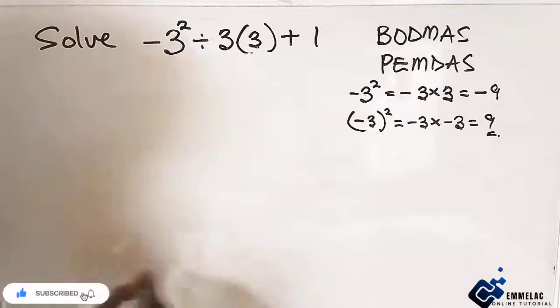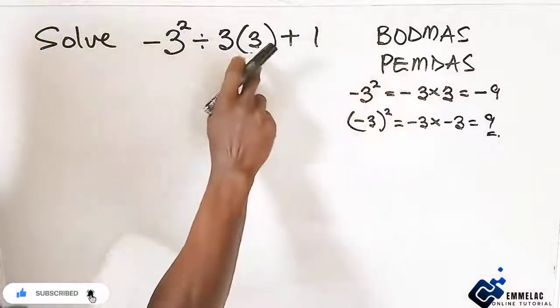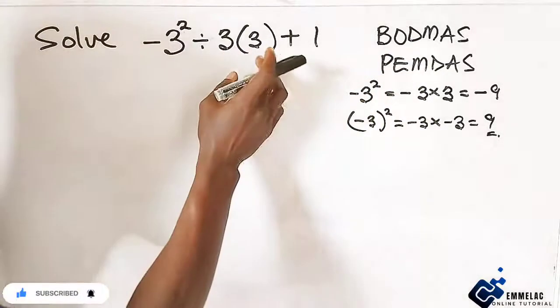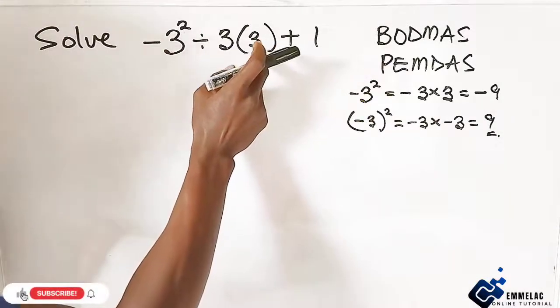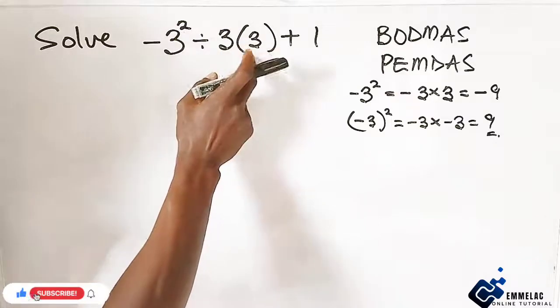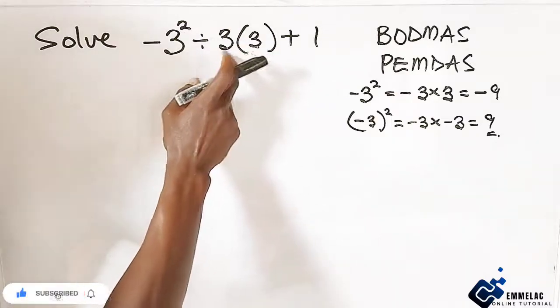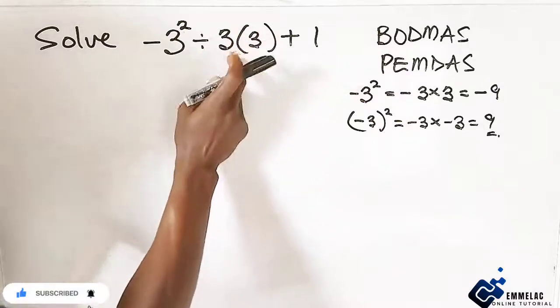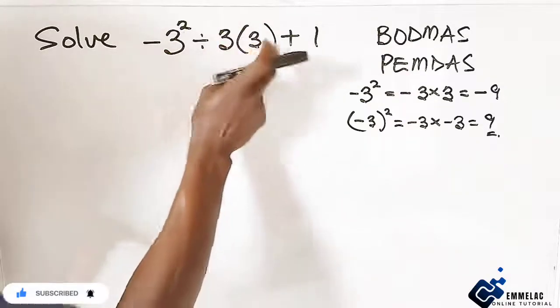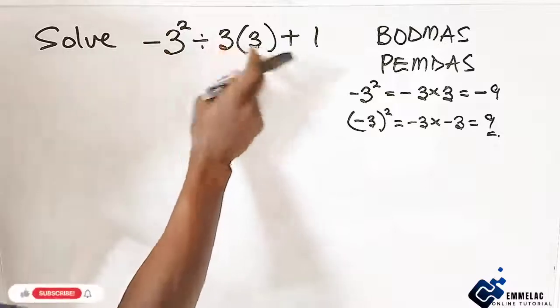Now, for us to open this bracket here, if we have to solve anything in a bracket, after solving whatever is in a bracket, the next thing is either to open as if the number outside the bracket is without any sign in between, then definitely we need to multiply.